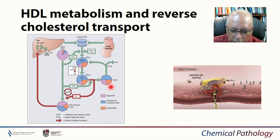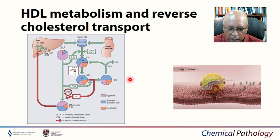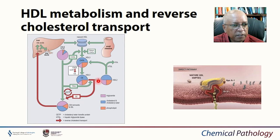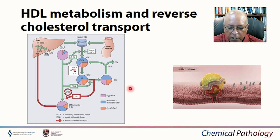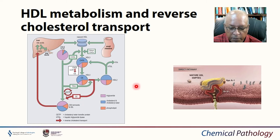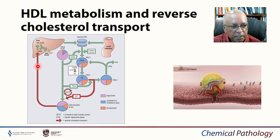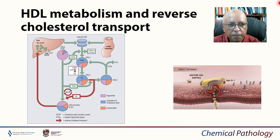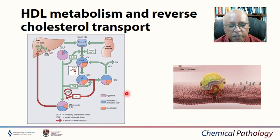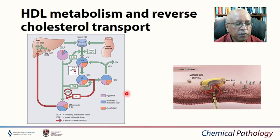In summary, HDL has two important functions: it is a source of apolipoproteins for chylomicrons and VLDL, and it mediates reverse cholesterol transport — taking up cholesterol from senescent cells and other lipoproteins and transferring it to remnant particles, which are taken up by the liver for biliary excretion. HDL also has anti-inflammatory properties and transports paraoxonase, an antioxidant.